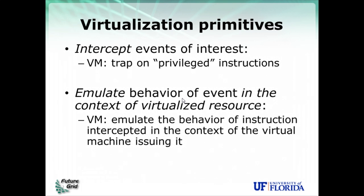In the case of a virtual machine, it will intercept events of interest by trapping. Trapping is basically an exceptional behavior that allows the virtual machine monitor to be put into context and begin doing the emulation of instructions. Classic virtual machines like VMware or KVM will trap certain kinds of instructions called privileged instructions, and when these instructions are trapped their behavior is emulated in the context of the virtualized resource.